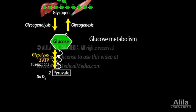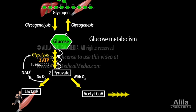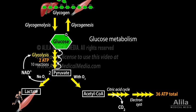In the absence of oxygen, such as in the muscles during exercise, pyruvate is converted into lactate. This anaerobic pathway produces no additional energy, but it regenerates NAD+, which is required for glycolysis to continue. When oxygen is present, pyruvate is further degraded to form acetyl-CoA. Significant amounts of energy can be extracted from oxidation of acetyl-CoA to carbon dioxide by the citric acid cycle and the following electron transport system.